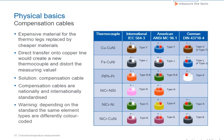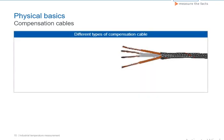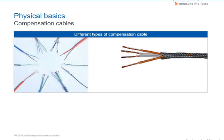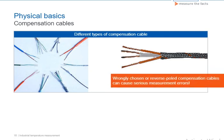Compensation cables have either solid or stranded conductors and are produced with a differing number of wires, shielding, and insulation. Color coding simplifies identification of the compensation cables. Wrongly selected or wrongly polled compensation cables can result in serious measurement errors.